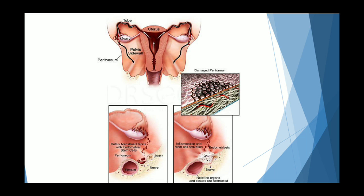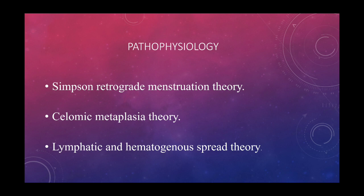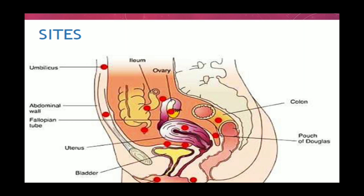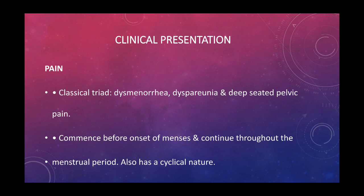These are some figures showing endometriosis. The pathophysiology includes basically three theories: Simpson's retrograde menstruation theory, the second is coelomic metaplasia theory, and the third is lymphatic and haematogenous spread. These are the sites where there is a possibility of endometriosis.